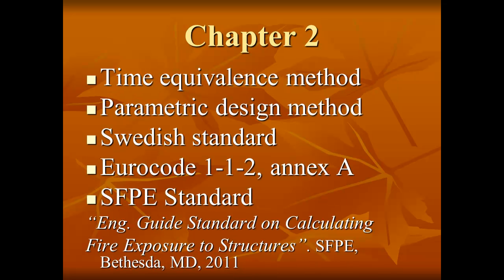Chapter 2 presents an overview of the main simplified methods of obtaining the structural fire load at the present time: the time equivalence method and the parametric design method. The parametric natural fire model considers the actual boundary conditions of the fire compartment concerning fire load, ventilation conditions, geometry, and thermal properties of enclosure. These curves have been incorporated into a Swedish standard and have also served as the basis for the parametric temperature-time curves of Eurocode 1-1-2. It also includes an overview of the SFPE Standard Engineering Guide on Calculating Fire Exposures to Structures, 2011.